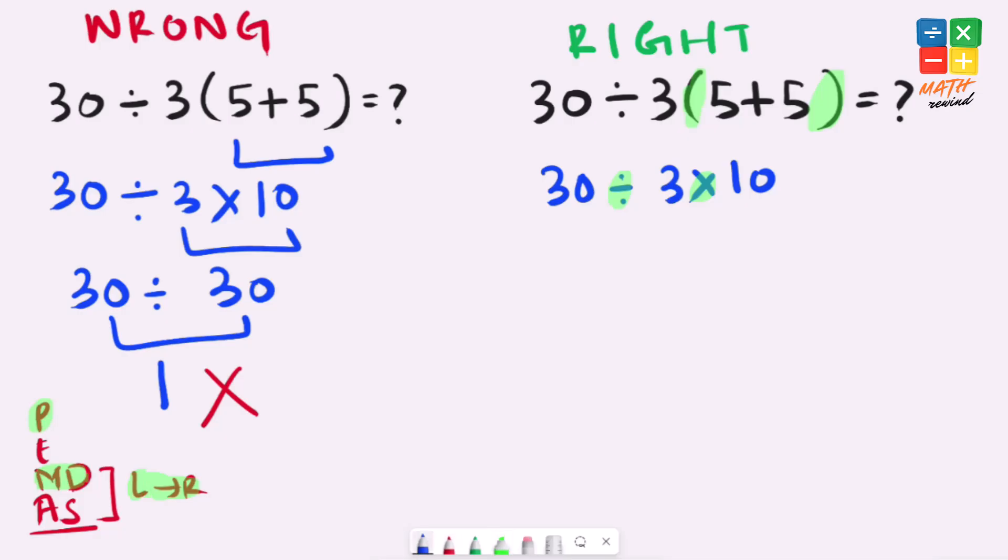So in this case on the left side we have 30 divided by 3 which gives us 10, and 10 times 10 gives us 100. And this is the correct answer to this problem according to the order of operations, also known as PEMDAS or BODMAS.